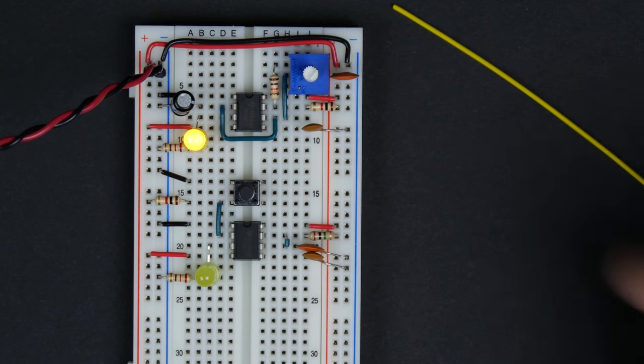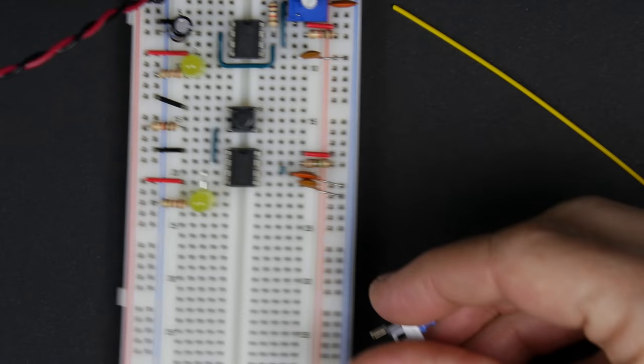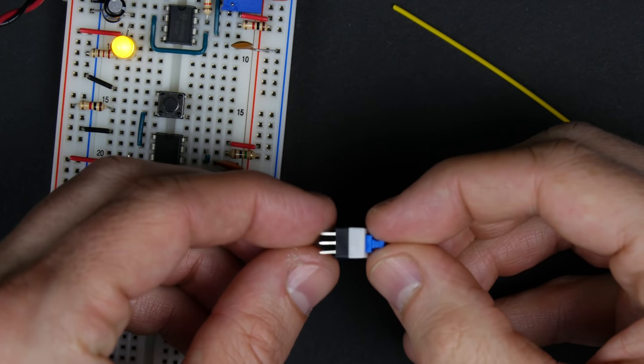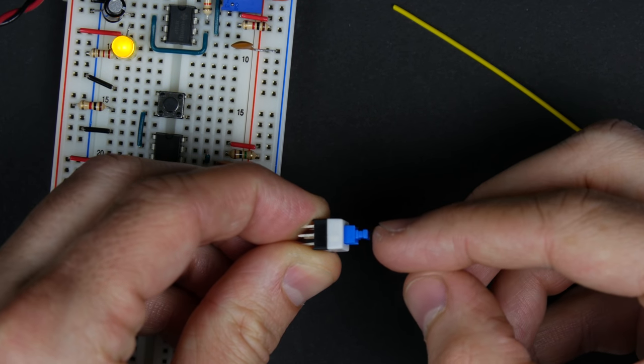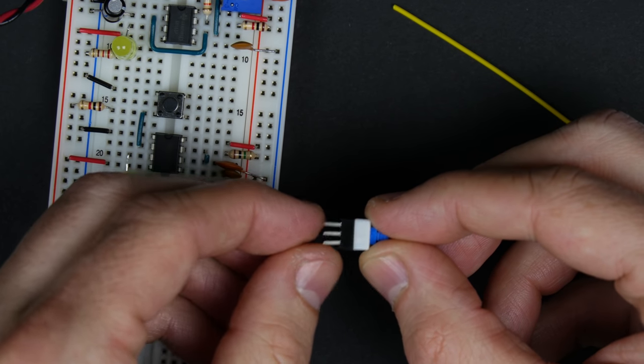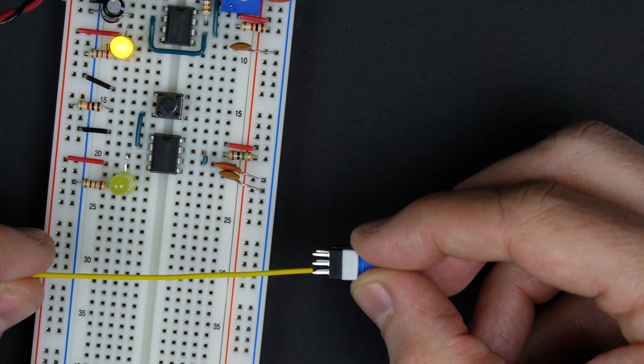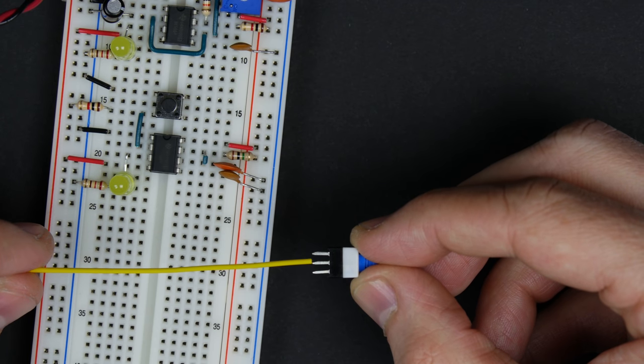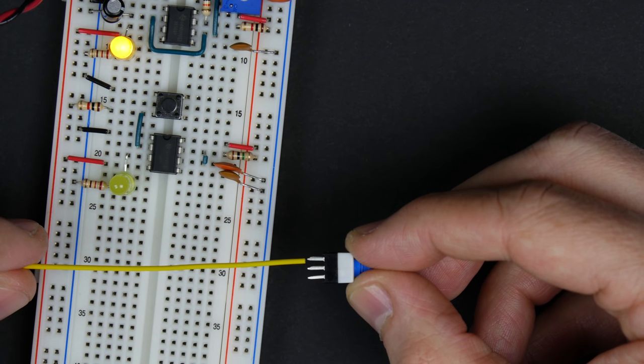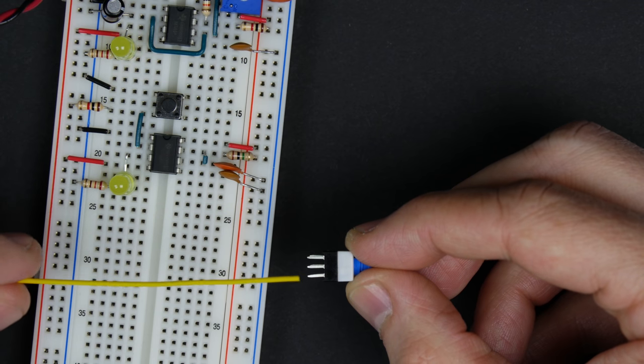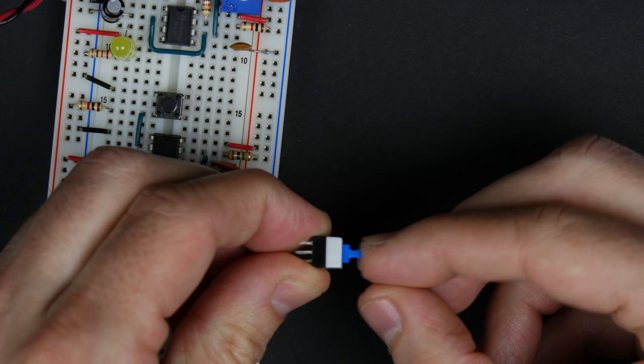And so you might think, well, we should use a switch. And I've got a pretty good switch here. This is a little push-button switch, and it's either out or in, and it's got these three leads. And so there's a center common pin, and then it's connected to either this pin or this pin, depending on whether it's in or out.